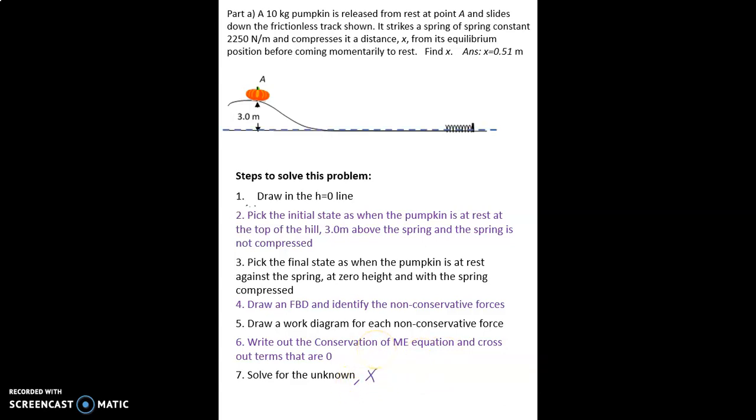All right let's go ahead and start these steps. So we've got our h equals zero line drawn in that dashed line right there. We'll go ahead and label it h equals zero and the other way to label it is to say that gravitational potential energy is equal to zero.